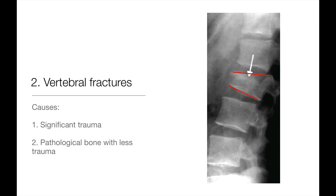If the cause was low energy trauma on a background of underlying bone disease, then it's the underlying bone disease that should be managed in order to prevent any further fractures from occurring. For example, if the fracture occurred in a patient with severe osteoporosis, you might want to encourage them to do more exercise, stop smoking, take calcium supplements, and perhaps bisphosphonates.